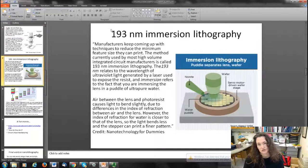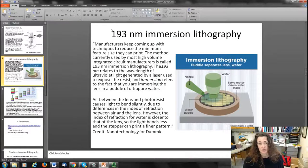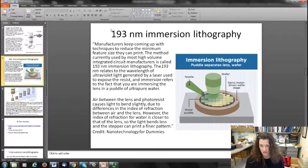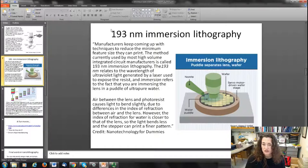Manufacturers keep coming up with techniques to reduce the minimum feature size. The method currently used by most high volume integrated circuit manufacturers is called 193 nanometer immersion lithography. Of course, the 193 nanometers relates to the wavelength of the UV light generated by the laser used to expose the resist, and the immersion refers to the fact that you're immersing the lens in a puddle of ultra-pure water.